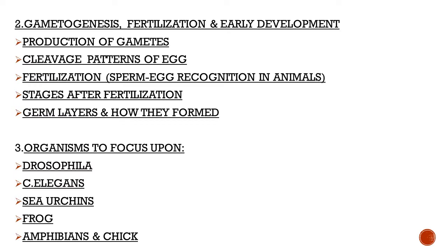Not just human fertilization — also go through fertilization in plants, sea urchins, and amphibians, as questions from these have appeared many times. Sometimes the steps are given in scrambled order and you are asked to arrange them correctly. The basic theme is egg and sperm recognition, with differences according to the organism and its habitat. For human fertilization, study it in very good detail.